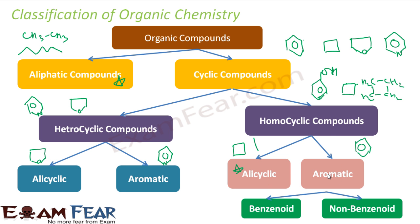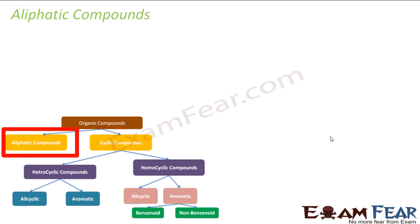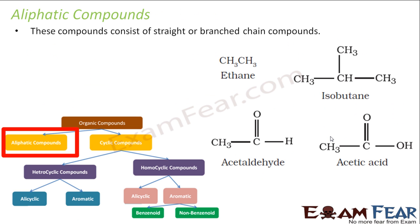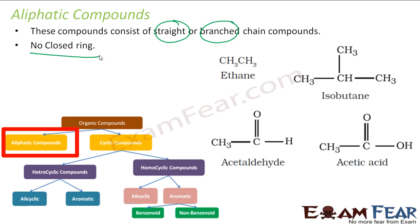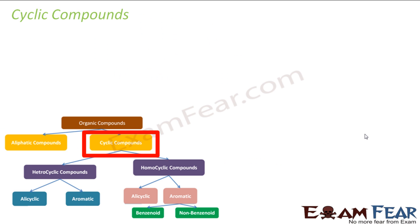Aliphatic compounds have straight or branched chains and no closed ring. Examples include ethylene — a straight chain with no ring — isobutane with a branched chain but no ring, acetaldehyde with no ring, and acetic acid with no ring. Aliphatic compounds may be straight or branched, but they must have no ring.